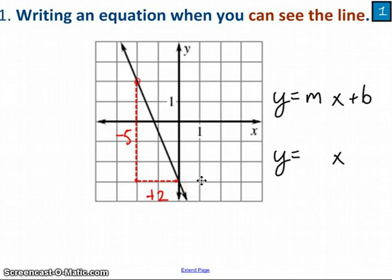Remember, slope is change in y over change in x. And b is simply where your graph crosses the y-axis. It's crossing it at negative 3. And that's your equation. It's as simple as that.